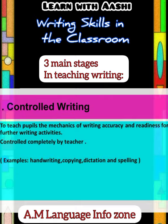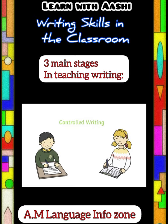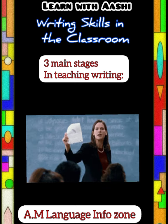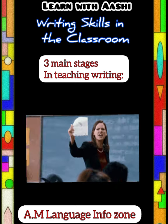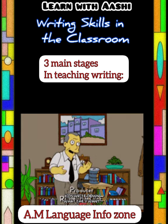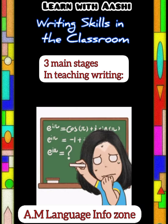To explain controlled writing further: when a child is in school and is very young, she does not yet have the mental approach to write independently. She is guided but in a controlled manner. In controlled writing, the child does not have full freedom — the teacher controls the process so that the student does not make mistakes.